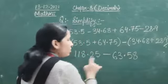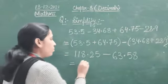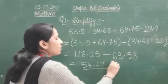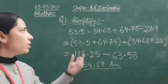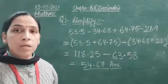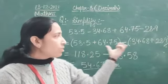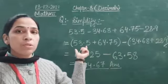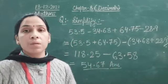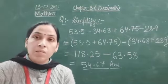Now do the subtraction: from 118.25 you are going to subtract 63.58 — you will be getting the answer 54.67. So this method you are going to use for doing simplification: keep addition ones in one bracket, subtraction ones in another bracket, and then do the subtraction.